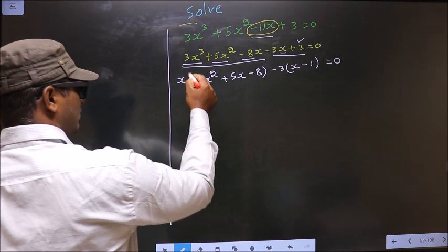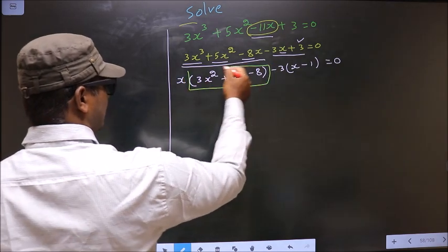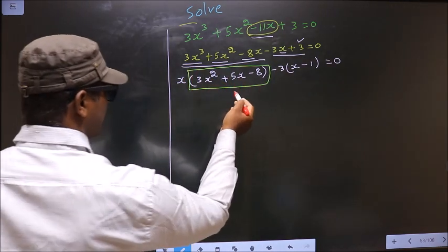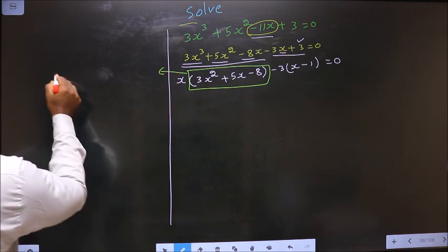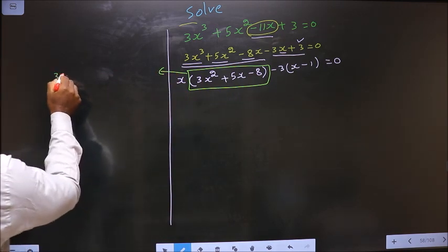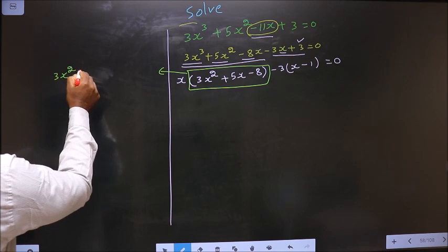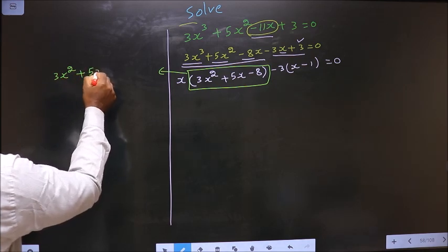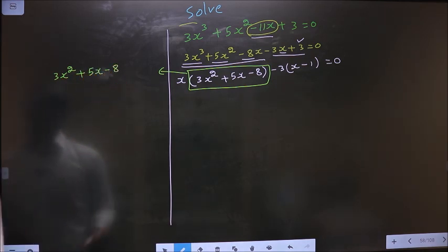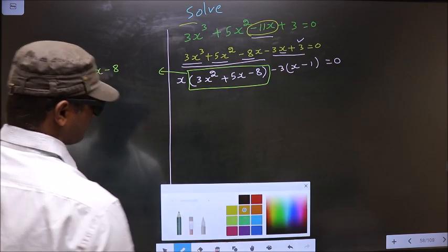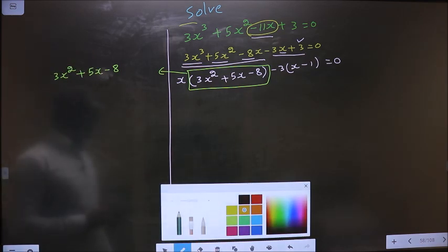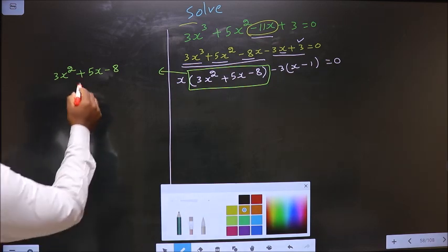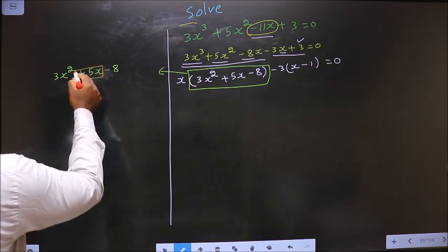Now we got a quadratic, so I will factorize this quadratic here. That is 3x square plus 5x minus 8. To factorize this quadratic we should change the middle term, that is plus 5x.